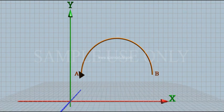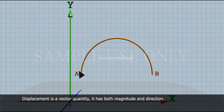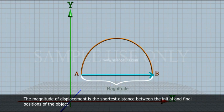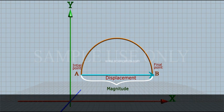Displacement: Displacement is a vector quantity. It has both magnitude and direction. The magnitude of displacement is the shortest distance between the initial and final positions of the object. This vector shows the displacement of a moving object.